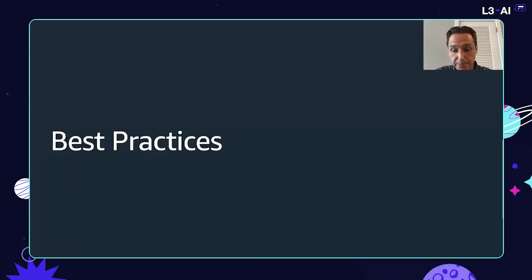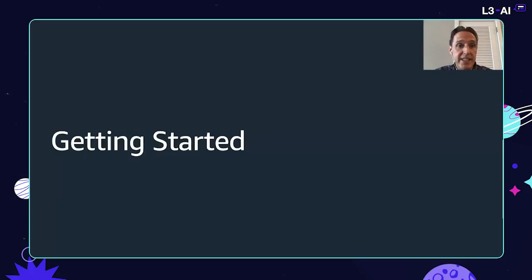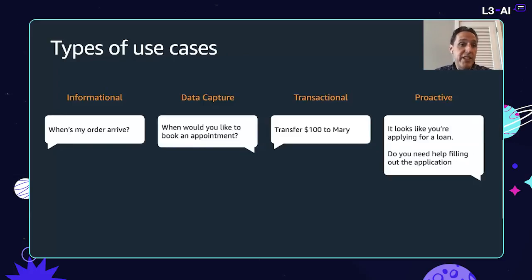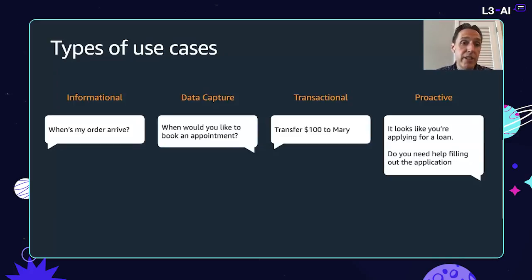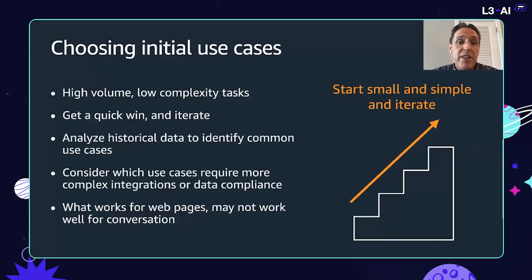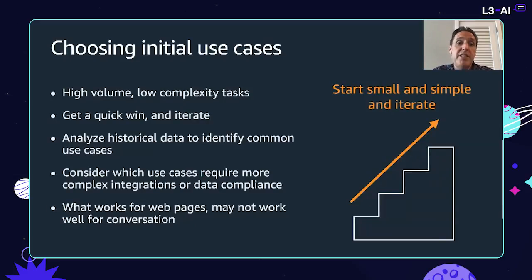In terms of getting started and selecting use cases, there are a few common types: informational ones like where's my order or what's the weather; data capture like signing up for an appointment or registering for a newsletter; transactional use cases like sending money from your account; and more proactive use cases where the chatbot monitors usage behavior and proactively reaches out. It's best to start simple and iterate — high volume, low complexity tasks are a great place to start. If you have historical data, that's the best starting point. Remember that what works on the web doesn't necessarily work in conversational interfaces; trying to regurgitate FAQs just doesn't work that well.